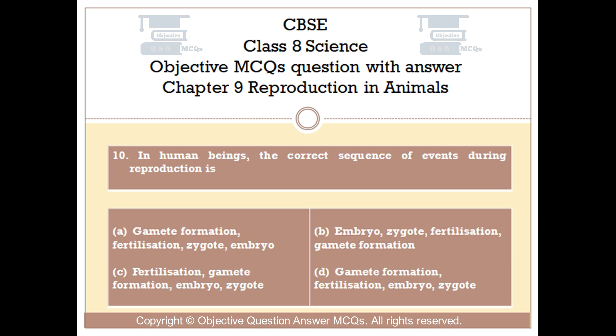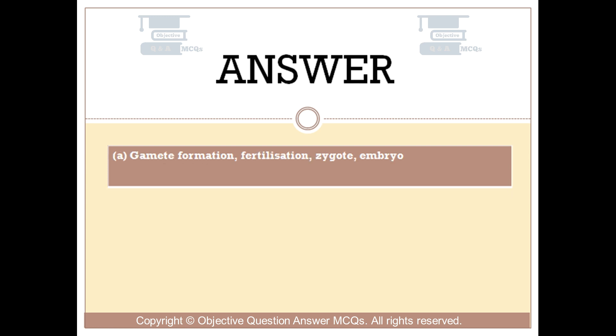Question number 10. In human beings, the correct sequence of events during reproduction is: Option A: Gamete formation → Fertilization → Zygote → Embryo. Option B: Embryo → Zygote → Fertilization → Gamete formation. Option C: Fertilization → Gamete formation → Embryo → Zygote. Option D: Gamete formation → Fertilization → Embryo → Zygote. The right answer is Option A: Gamete formation → Fertilization → Zygote → Embryo.